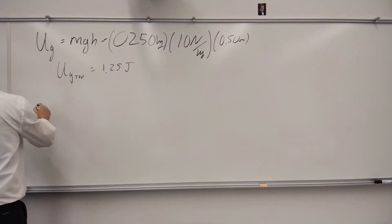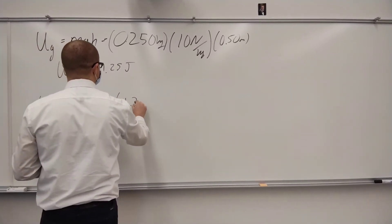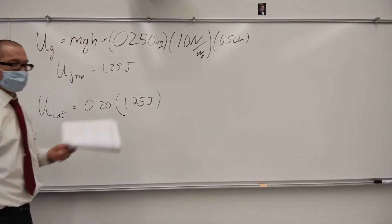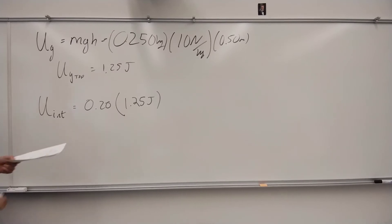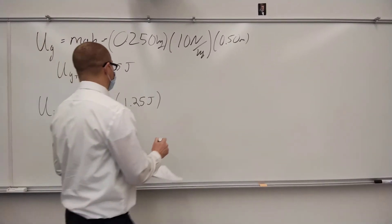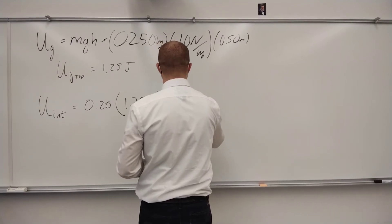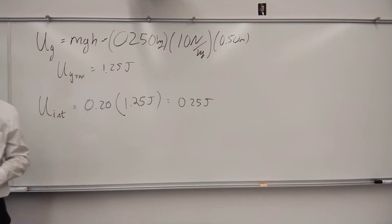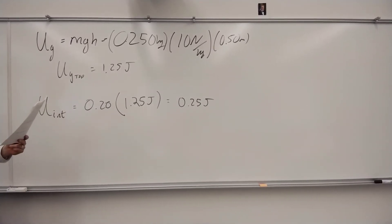Internal energy builds up down the ramp. It's going to be 0.20 times 1.25 joules, 20% of that initial gravitational energy. So that looks like it's going to be about 0.25 joules. About 20% of that. So 0.25 turns into internal energy.